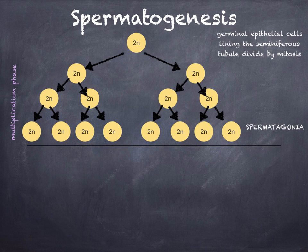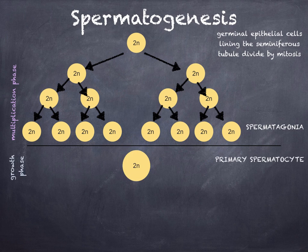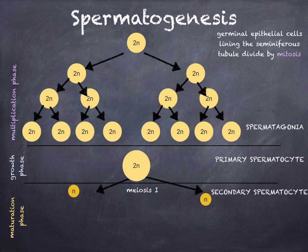Germinal epithelial cells line the seminiferous tubules and undergo repeated mitosis, forming about six layers of cells. Some of these cells remain as germinal cells; others become spermatogonia. Notice how the cells are still diploid — still 2N — in the multiplication phase. The spermatogonia increase in size and form the primary spermatocyte, which is still diploid. The primary spermatocyte then undergoes meiosis 1, forming the secondary spermatocyte.